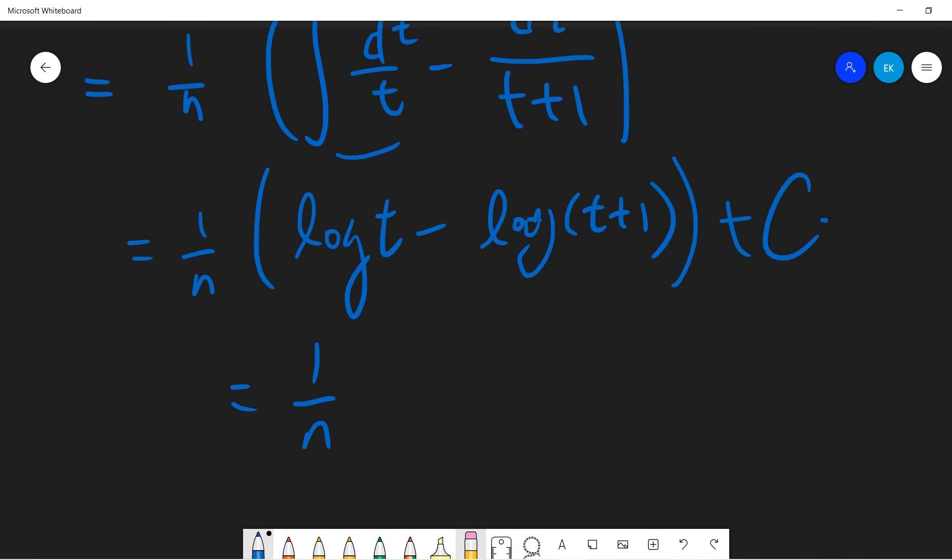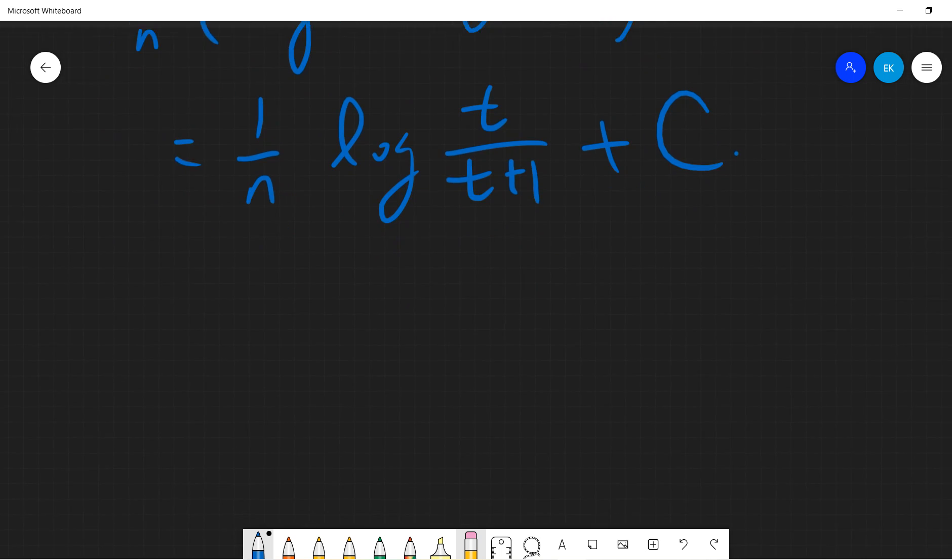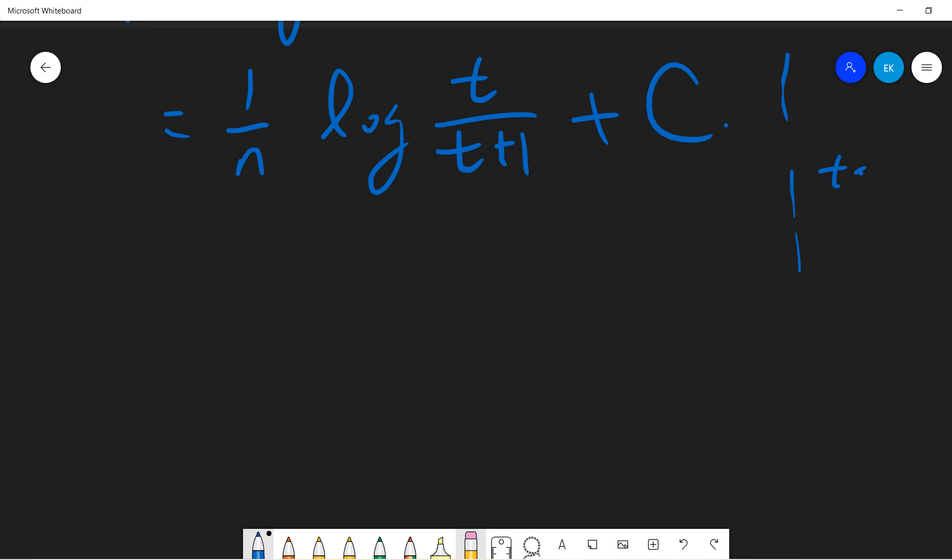So we are happy that we solve it. So it's this plus c, 1 over n log t divided by t plus 1. And remember that t is x to the n. So it's 1 over n log x to the n divided by x to the n plus 1 plus c. Okay, that's it.